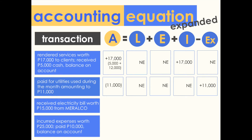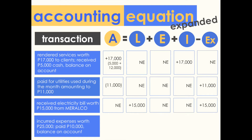Transaction three: received electricity bill worth 15,000 pesos. Here the bill was received, meaning the electricity was already consumed — this indicates it is already an expense. There is a 15,000 peso increase in expense. At the same time, no payment has been made yet, meaning there is an increase in payables or liabilities. The net effect is zero for the right side of the equation, which is balanced with the left side — assets.